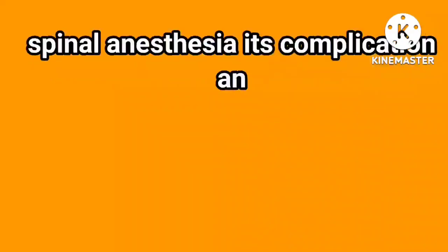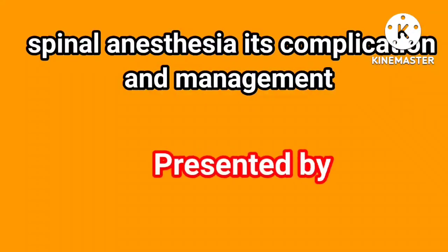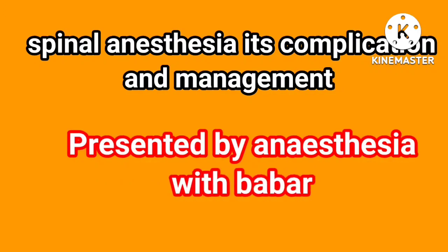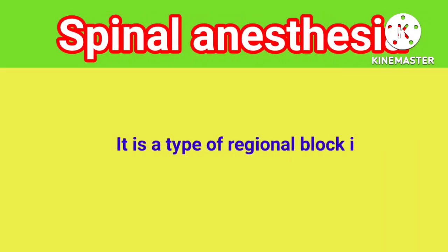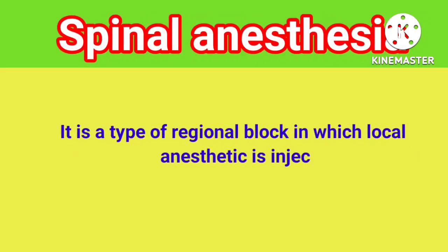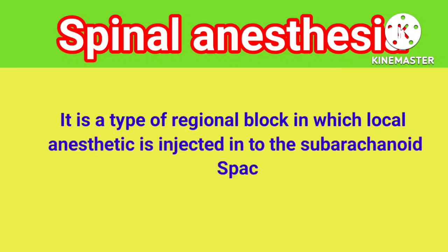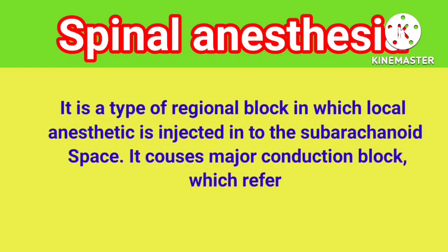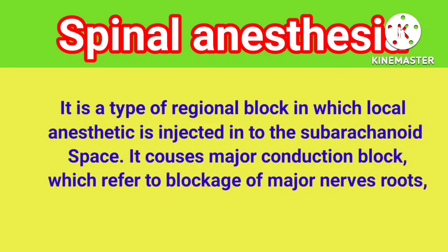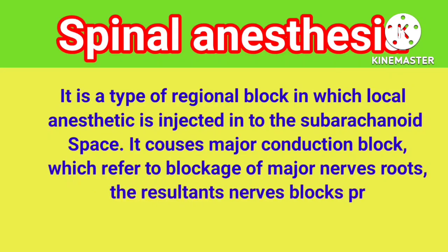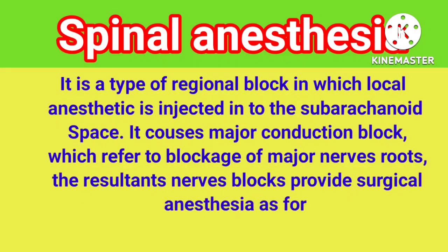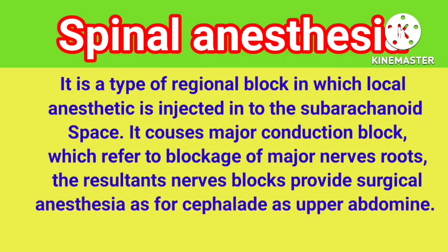Spinal Anesthesia: Its Complications and Management. Presented by Anesthesia with Babar. Spinal anesthesia is a type of regional block in which local anesthetic is injected into the subarachnoid space. It causes a major conduction block, referring to blockage of major nerve roots. The resultant nerve block provides surgical anesthesia as far cephalad as the upper abdomen.